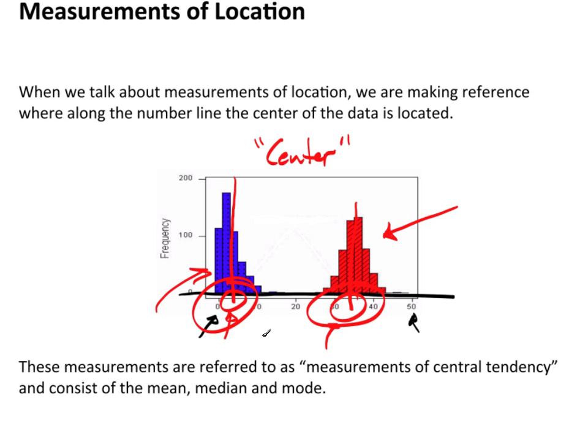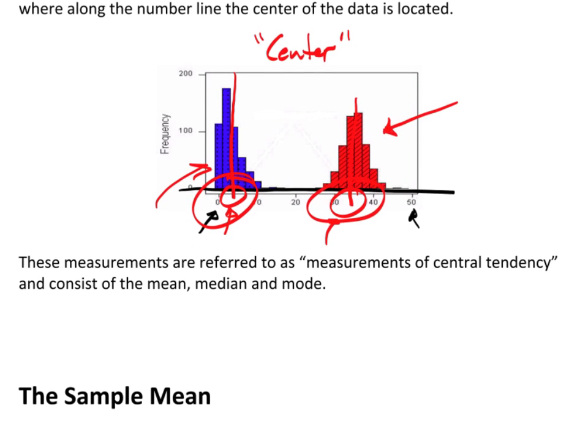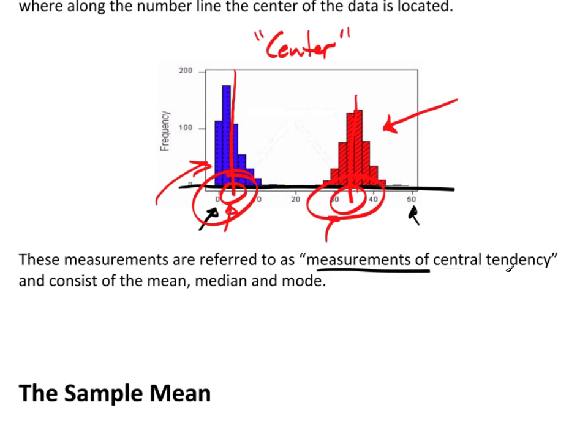These measures are referred to as measurements of central tendency—the center, central tendency. And the three measurements that we're going to talk about are first the mean, the median, and the mode. All three of these are measurements of central tendency.